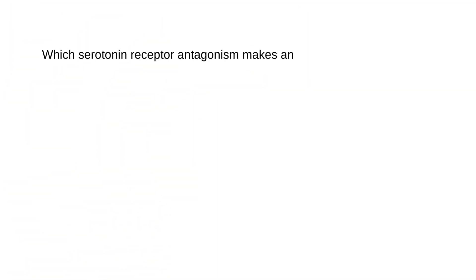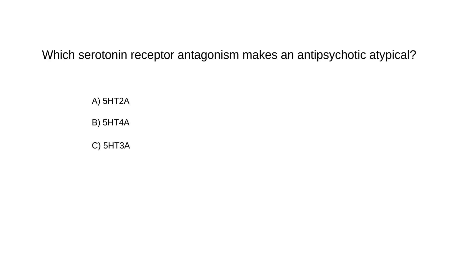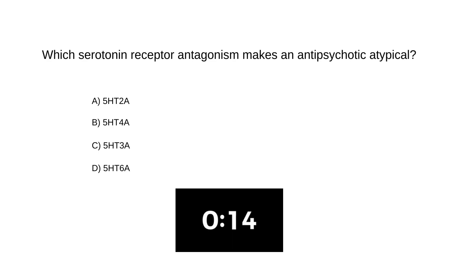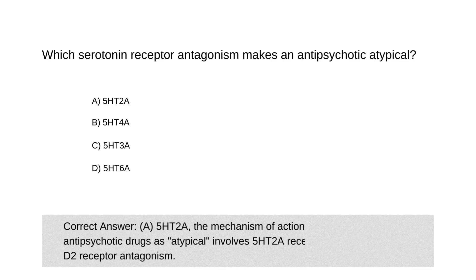Which serotonin receptor antagonist makes an antipsychotic atypical? A) 5-HT2A, B) 5-HT4A, C) 5-HT3A, or D) 5-HT6A. The correct answer is A, 5-HT2A. The mechanism of action which defines an antipsychotic drug as atypical involves 5-HT2A receptor antagonism and D2 receptor antagonism.